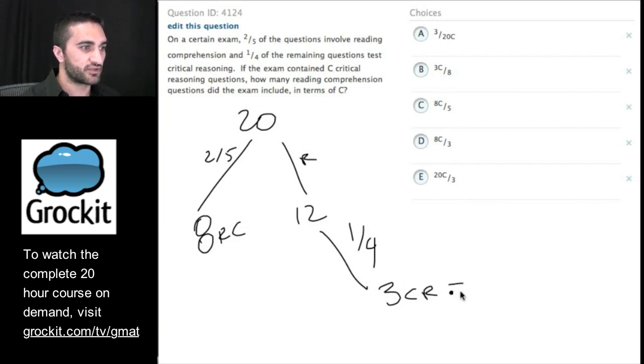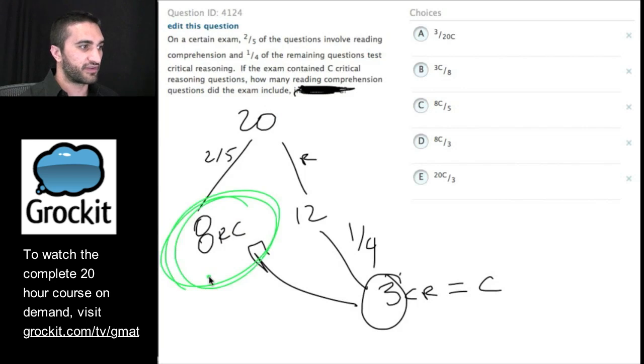If the exam contains C critical reasoning questions, so C, then how many reading comprehension questions did the exam include in terms of C? This never means anything, just answer the question - how many reading comprehension questions did the exam include? So the value for C is 3 and we're looking for 8 because we already have the answer to the question. The answer is 8 and C is 3.